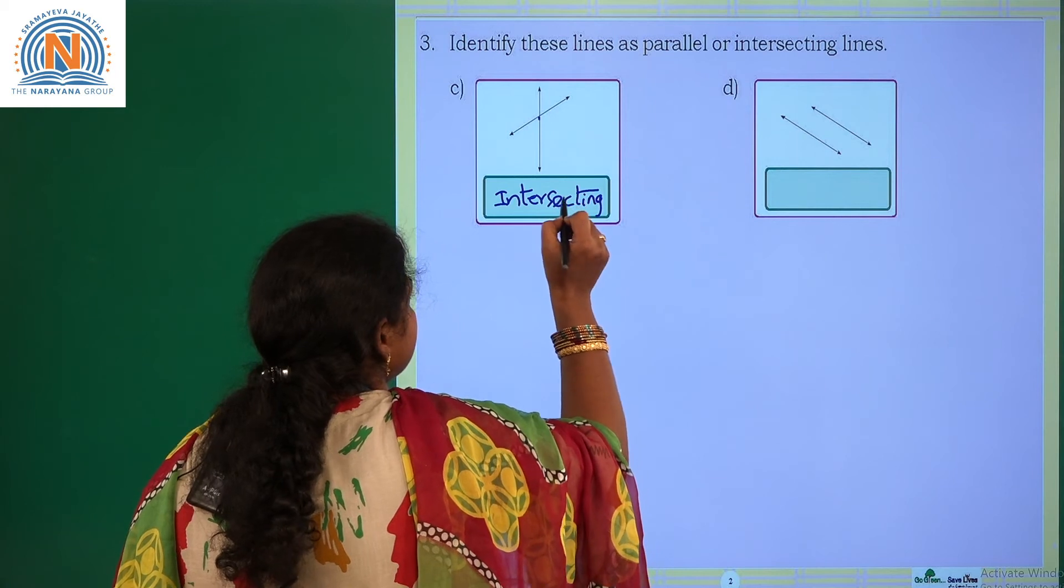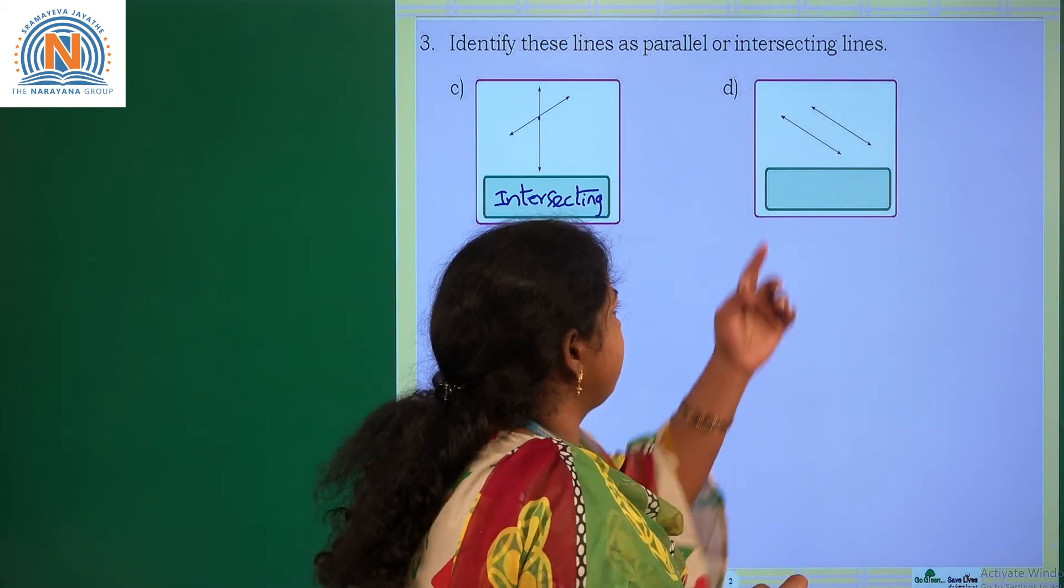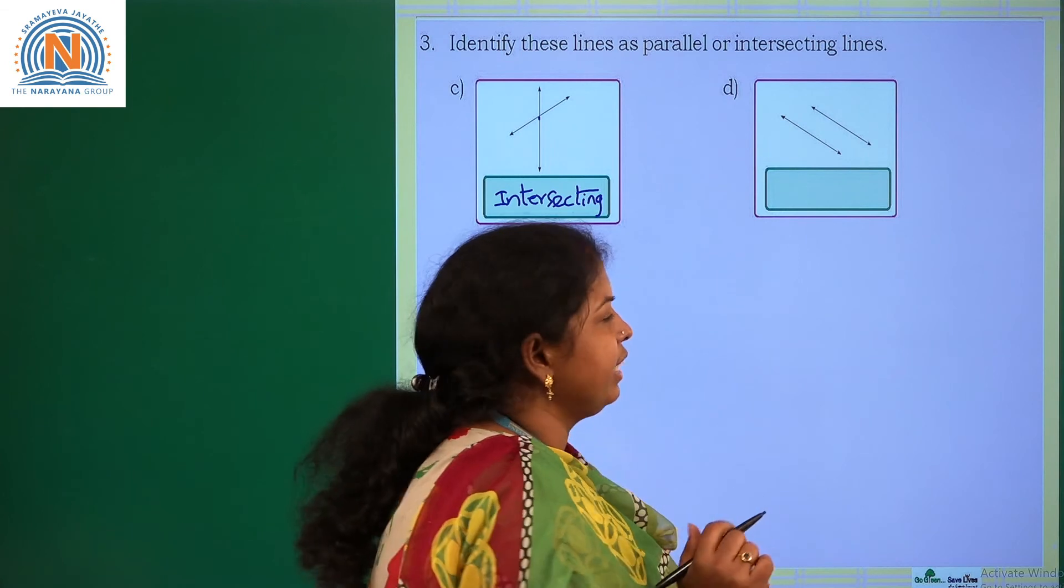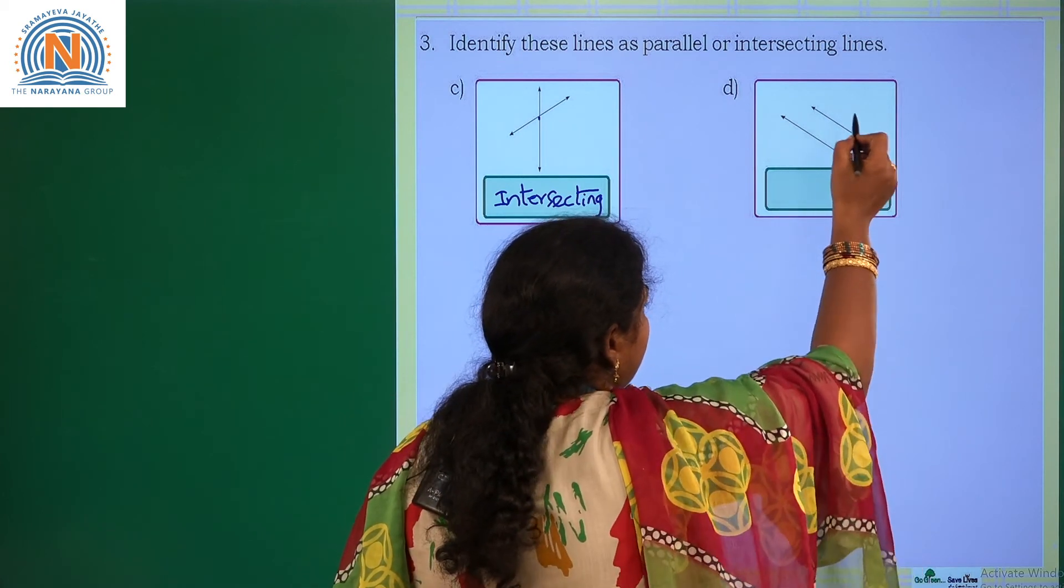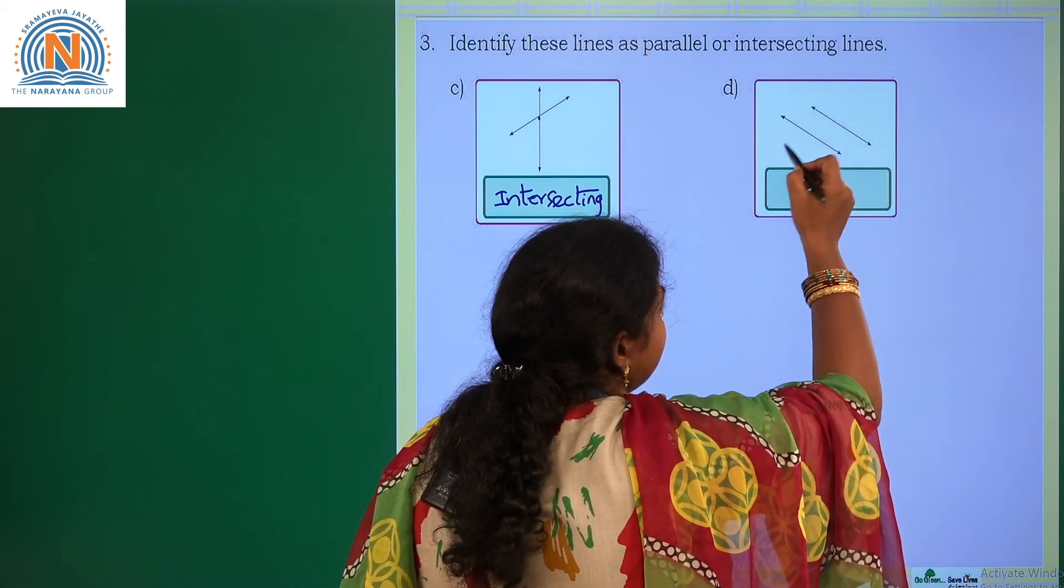The next one - parallel lines or intersecting lines, you need to identify. If you observe these two lines, are they intersecting anywhere? No.